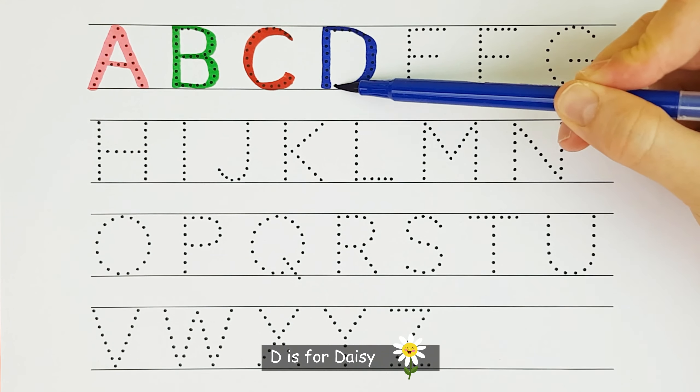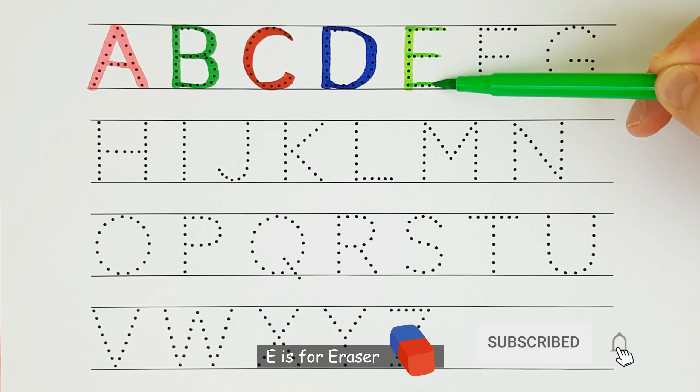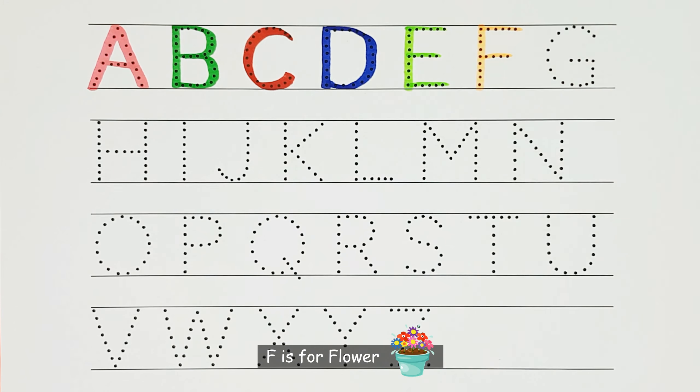D. D is for Daisy. D. E. E is for Eraser. E. F. F is for Flower. F.